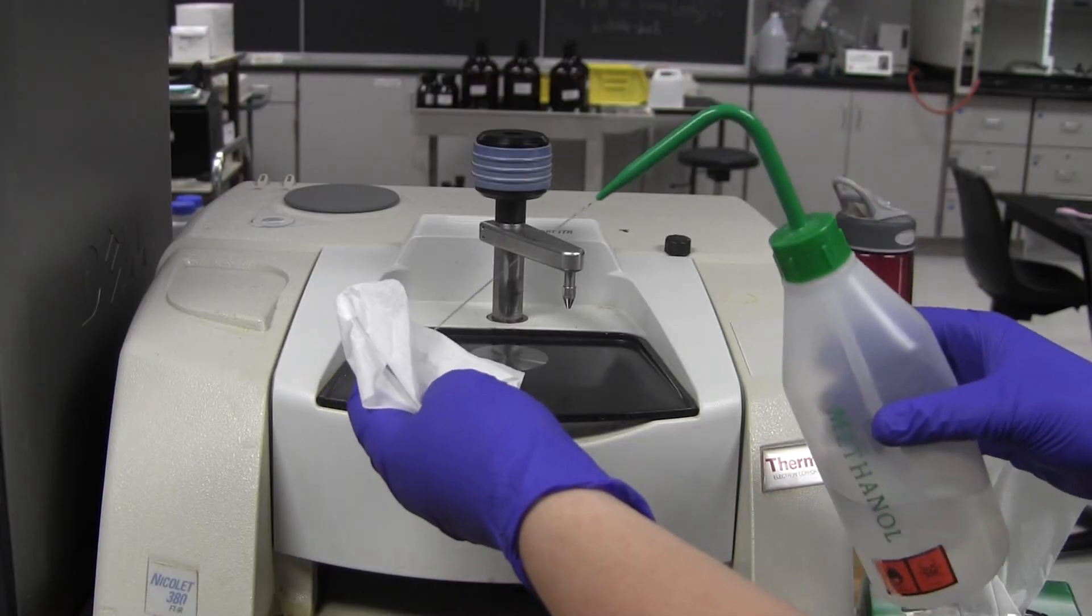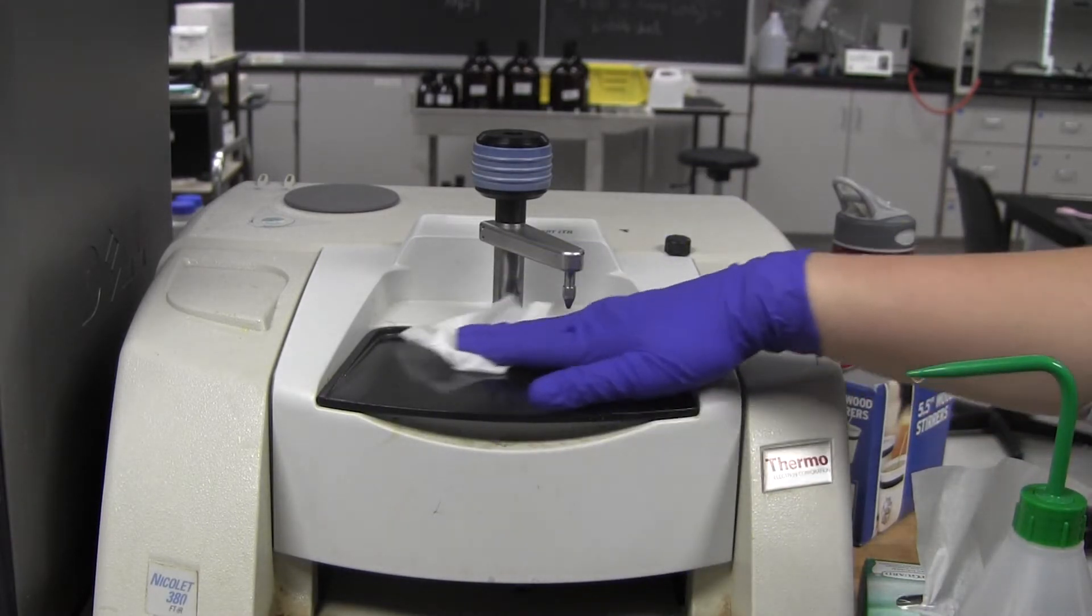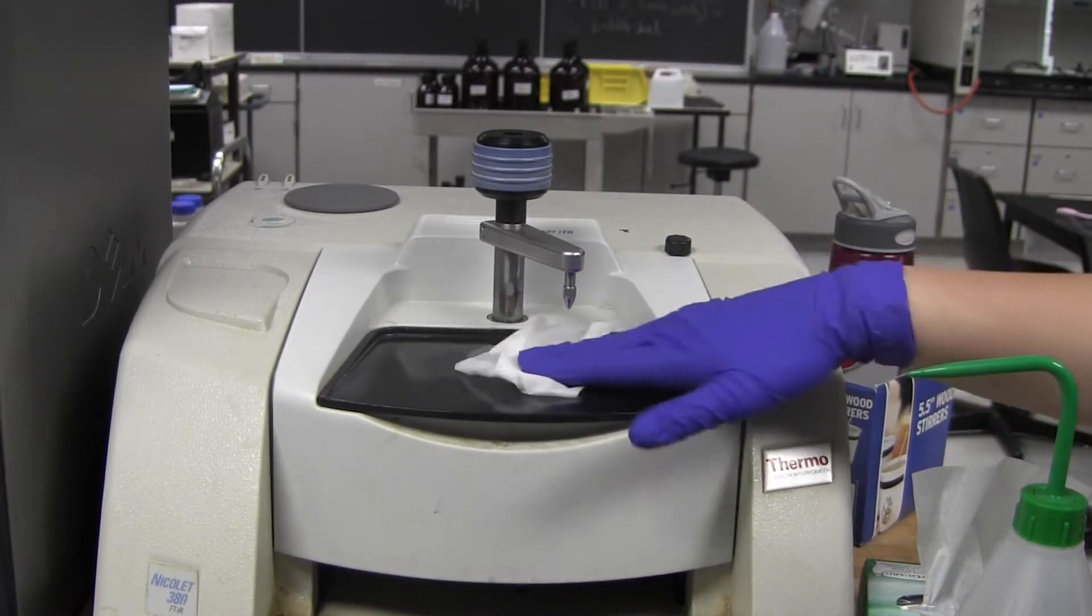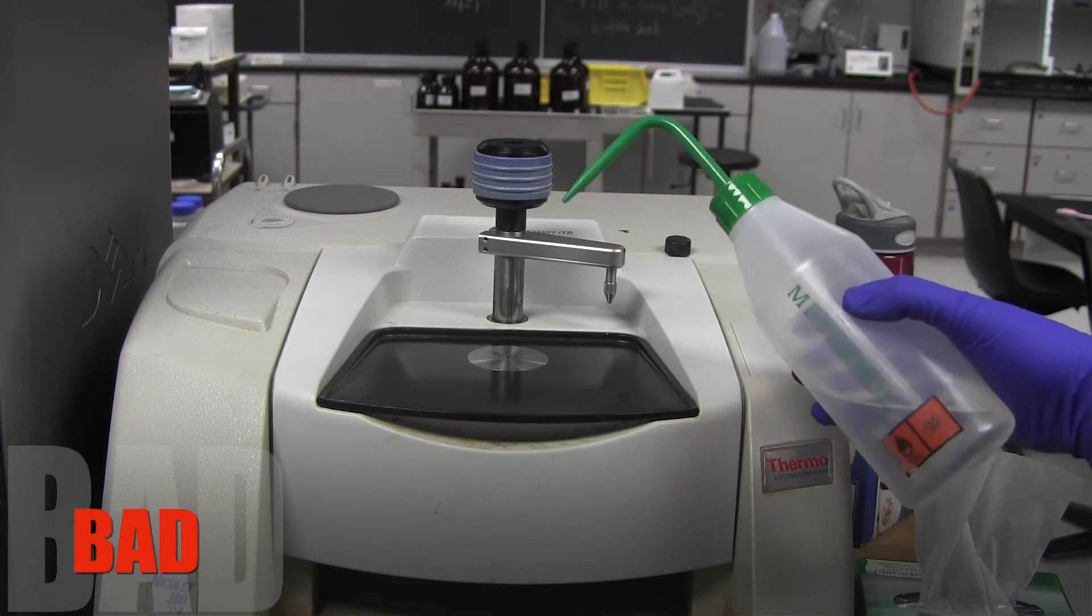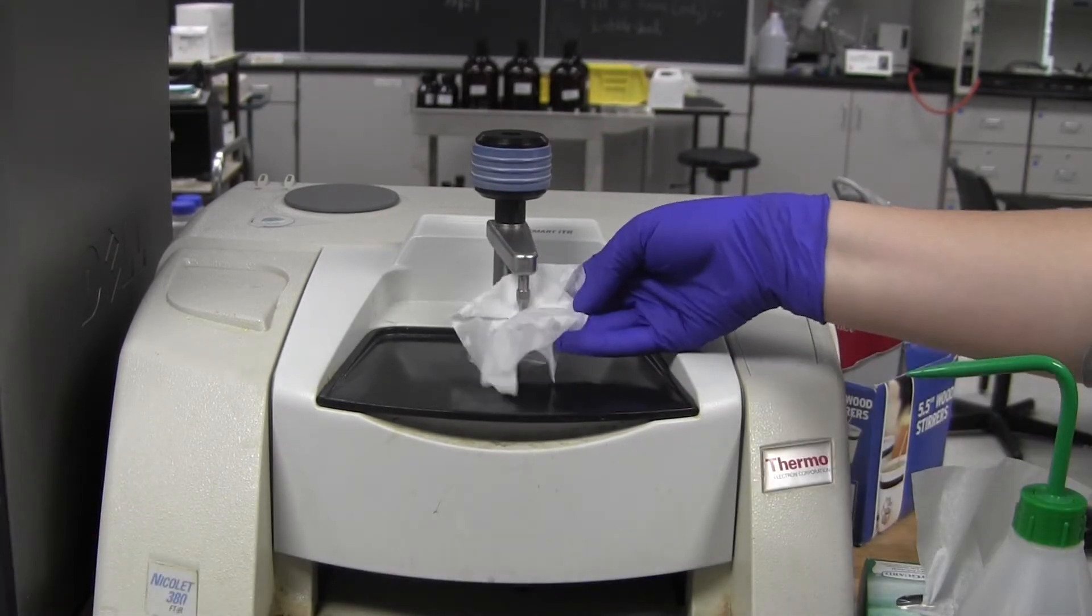First, make sure that the sample plate and crystal lens are clean. If not, squirt some methanol on a tissue and wipe the area clean. Never squirt methanol directly onto the crystal. It will ruin the machine. Be sure to clean the end of the arm as well.